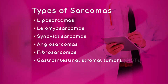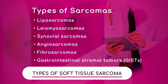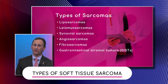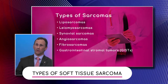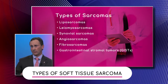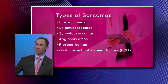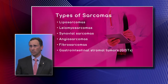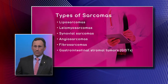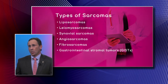Just to touch base on some of these: liposarcomas are the most common types of sarcomas. Those are arising from the fatty tissues and as I mentioned, they can happen in the thigh, they can happen in the back of the abdomen, the retroperitoneum, but in many other places — anywhere, really.